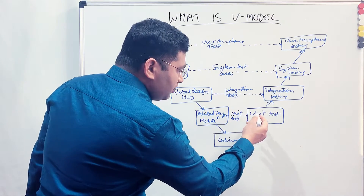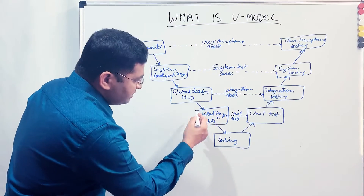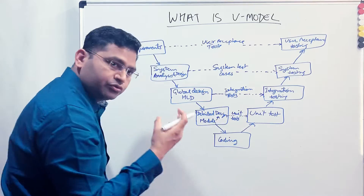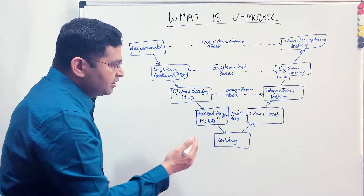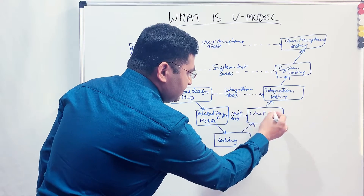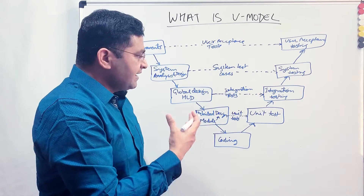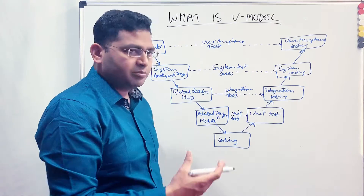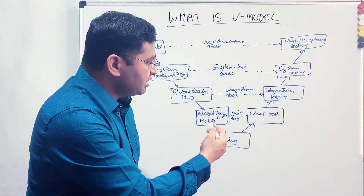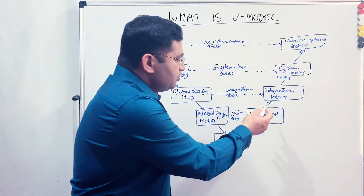Once all design phases are complete, the coding phase begins. Developers start coding for those smaller modules, and once the modules are ready, the test team — having already written test cases through reviewing documentation — starts unit testing. The application is launched and tools are used to perform unit testing. If done by developers, they execute it; if you are a white-box tester, you execute the code that developers have written for those modules.